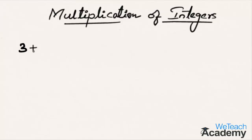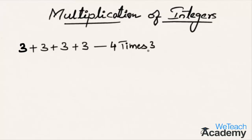Multiplication is nothing but repeated addition. For example, 3 plus 3 plus 3 plus 3 is 4 times 3. In multiplication we write this as 4 multiplied by 3. So what is 4 multiplied by 3?